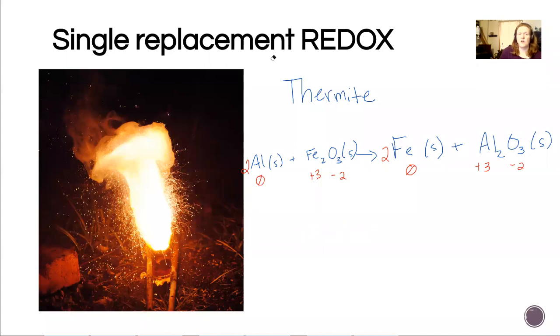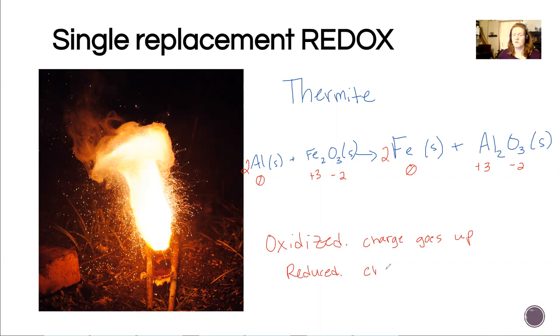So pause the video again and see if you can figure out which thing is being oxidized and which thing is being reduced. So remember, just a reminder that the thing being oxidized, the charge is going to go up, and the thing being reduced the charge goes down. So if I have a reduced bank balance, that's because I spent my money, so reduced goes down, oxidized goes up. So aluminum is going from zero to plus three, that's going up so aluminum is being oxidized. Iron goes from plus three to zero, that's going down. So that means that the iron ion in this case is being reduced. So you could also write that the Fe2O3 is being reduced. Both of those would be acceptable answers. So that's what the word oxidized and reduction means.